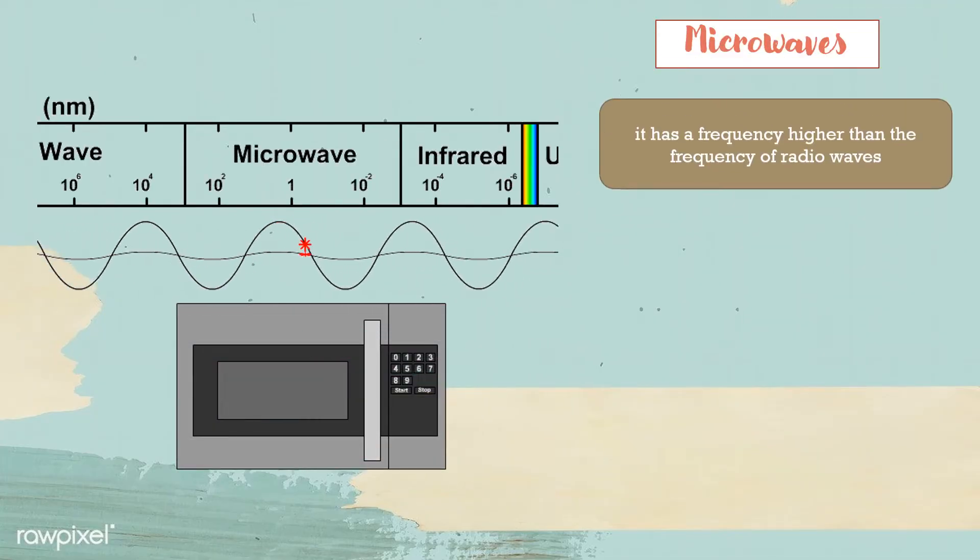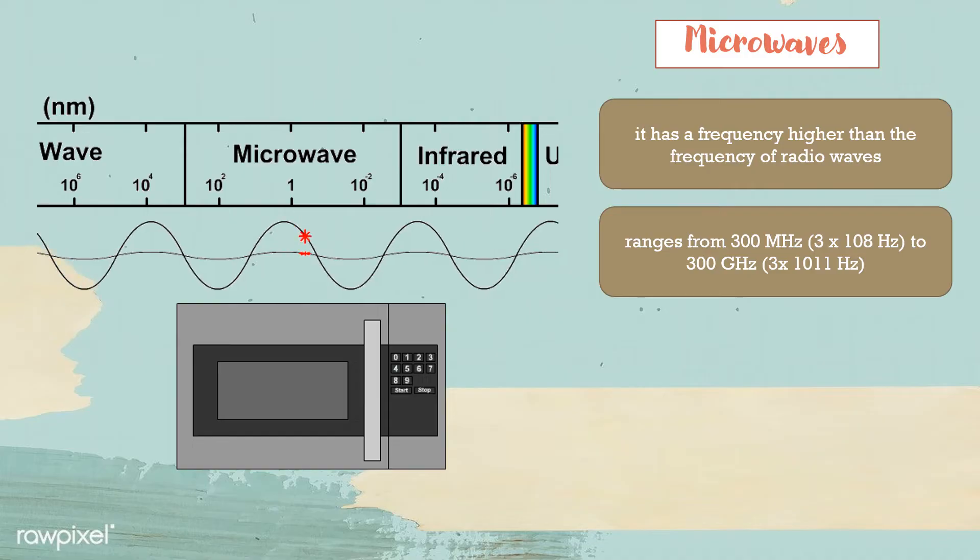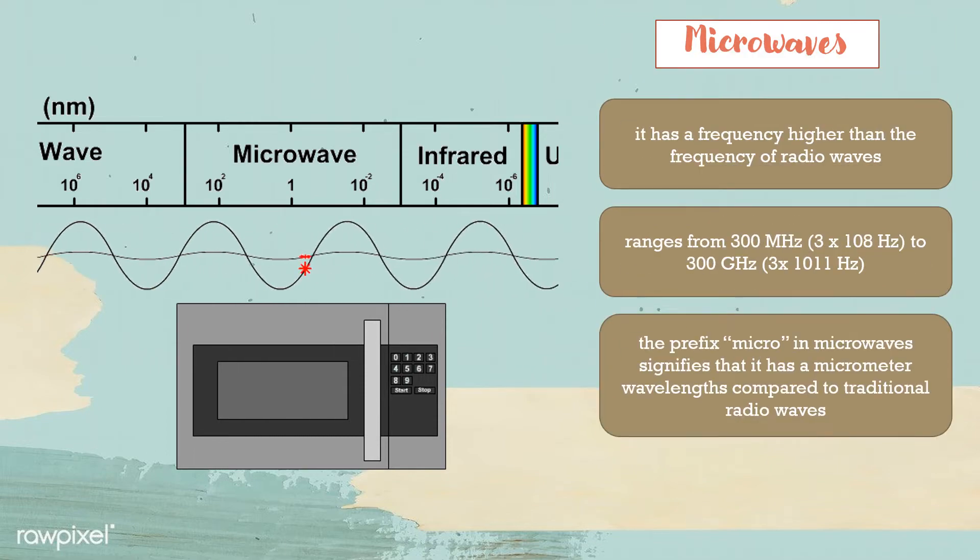The next type is microwaves. It has a frequency higher than the frequency of radio waves. Ranges from 300 MHz to 300 GHz. MHz is 1 million cycles per second while GHz refers to 1 billion Hz. The prefix micro in microwaves signifies that it has a micrometer wavelength compared to traditional radio waves.